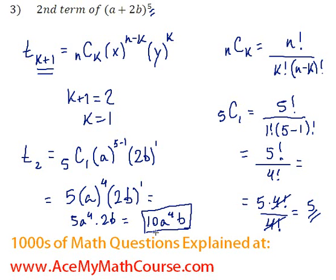That is the second term for the expansion of (a + 2b)^5.